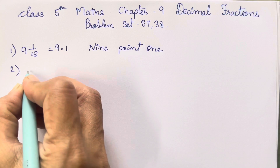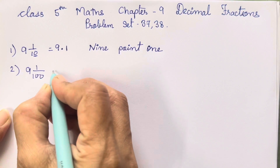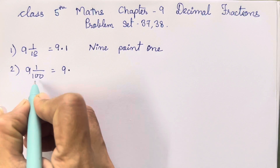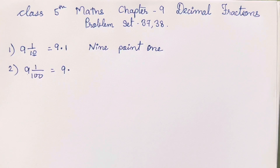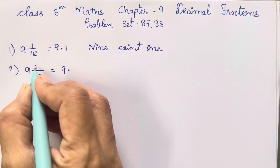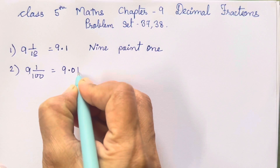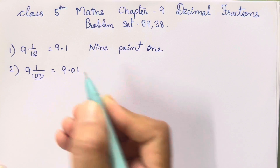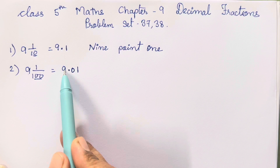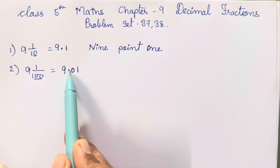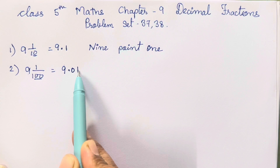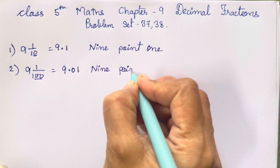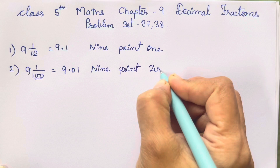Let's move on to the second one. Same, but here 100 has been given. Now 9 will come before the decimal point. Two zeros are there, which means we have to write two numbers after the decimal point. But over here only 1 is there, so this is going to be 0, 1. The difference between 10 and 100: two zeros means two numbers after the decimal point. This is in the units place, this is tenths, and this is hundredths. So this is going to be 9.01.